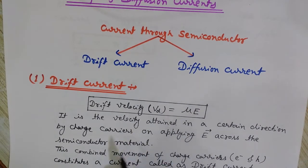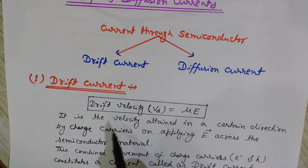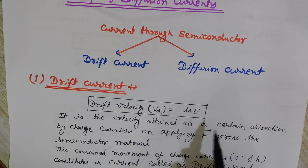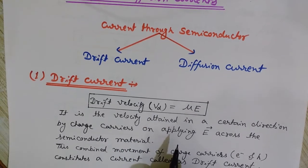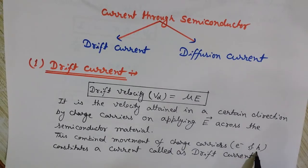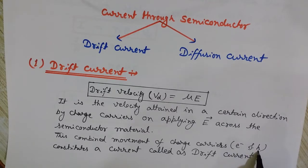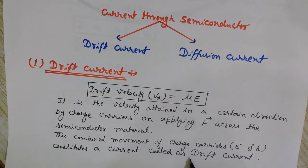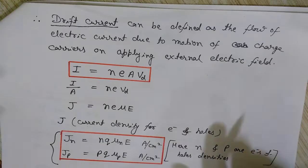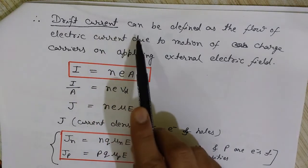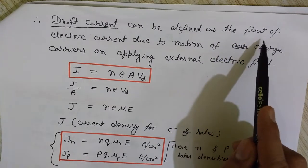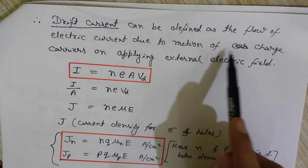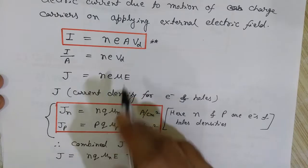Whenever we apply an external electric field to the semiconductor material, the random motion of electrons and holes converts into motion in a particular direction, and that causes an electric current to flow in that semiconductor. The combined movement of both electrons and holes — which are the charge carriers in a semiconductor — causes the drift current. The formal definition: drift current is the flow of electric current due to the motion of charge carriers on applying an external electric field.